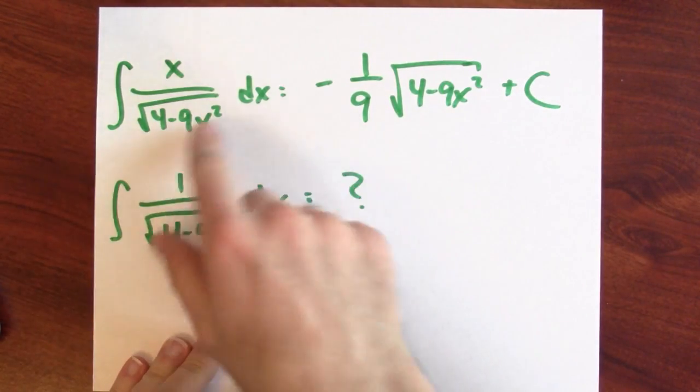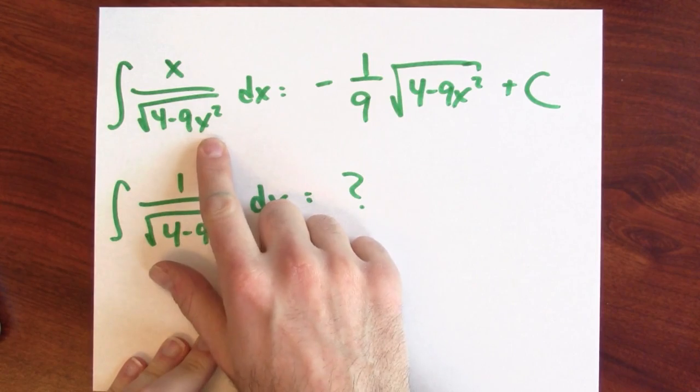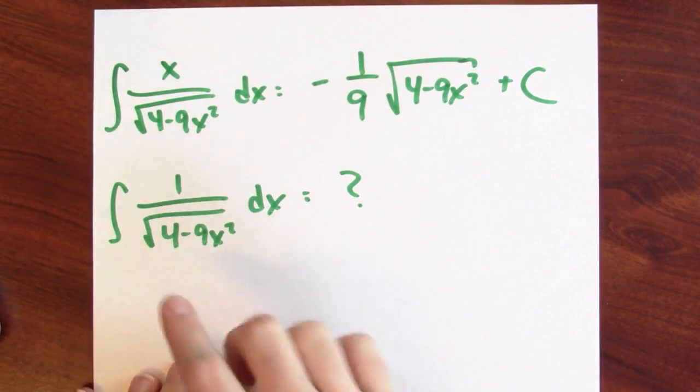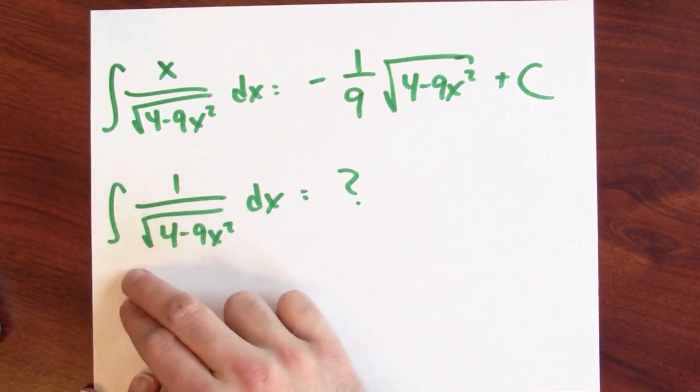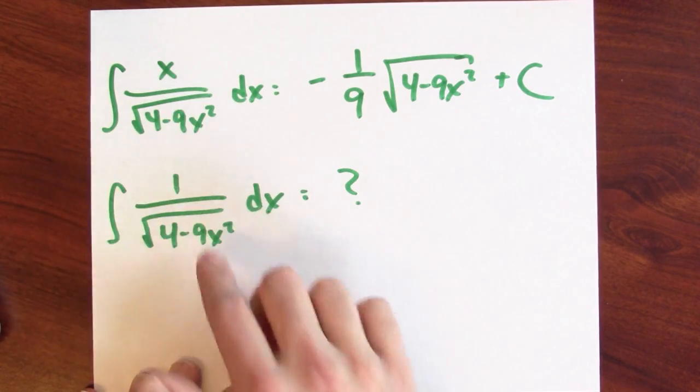I should warn you here. Something that makes anti-differentiation so hard is that similar looking integration problems can have totally different looking answers. For example, we just saw how to anti-differentiate this very similar looking function. 1 over the square root of 4 minus 9x squared. The only difference is that I got rid of the x in the numerator. But that's a big difference. That x in the numerator was facilitating the substitution. I needed that x there in order to have something to fit into the du. Without that x there, what am I supposed to do?